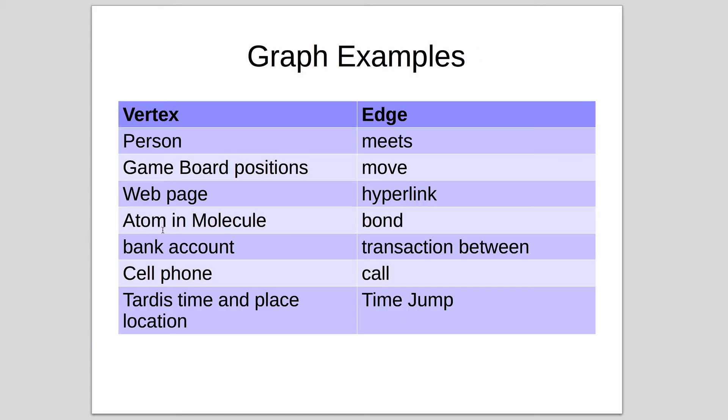Here are some other graph examples now that we've introduced vertices and edges. A person meets someone else: a person could be the vertex and the edges would represent each meeting between people. Game board positions: if you play a game and change positions when you make a move, each board with its unique set of pieces represents a vertex, and the move represents the edge, which is the transition from one board to another board. We're going to use this later in this chapter.